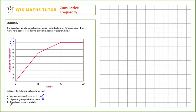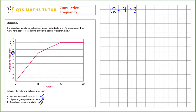Next for part C: three pupils got above a grade B. If you read up from grade B and then across, we see that nine pupils got a grade B or C. So the number of pupils who got a grade above B is 12 — the total number of students — take away nine, which equals three. So three pupils got above a grade B, true. Our answers were true, false and true.